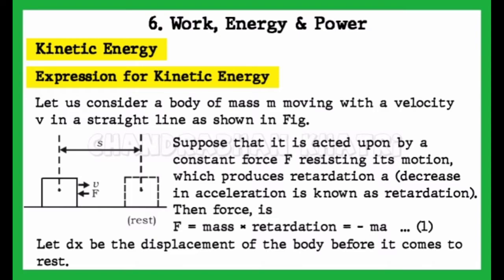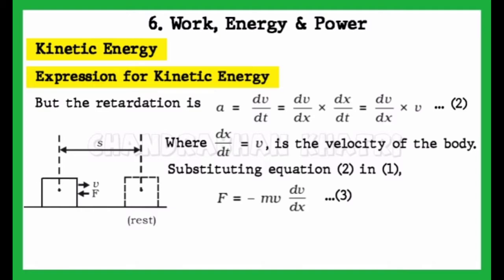Let dx be the displacement of the body before it comes to rest. The retardation a = dv/dt, or we can write a = (dv/dx)·(dx/dt), or a = (dv/dx)·v. This is equation 2, where dx/dt = v is the velocity of the body.